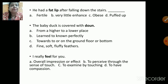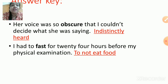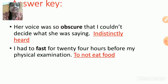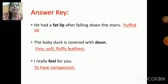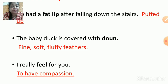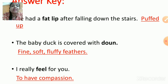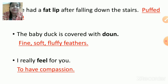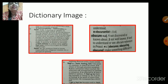The correct answers: 'Her voice was so obscure' — definition is indistinctly heard. 'I had to fast for 24 hours before my physical examination' — to not eat food. 'He had a fat lip after falling down the stairs' — puffed up. 'The baby duck is covered with down' — fine soft fluffy feathers. 'I really feel for you' — to have compassion.